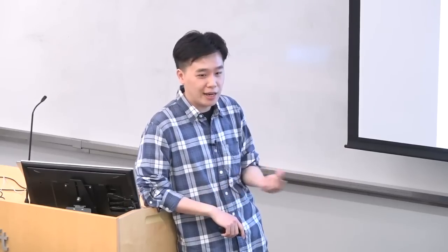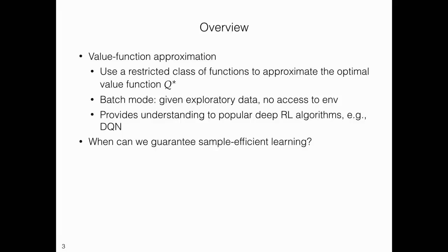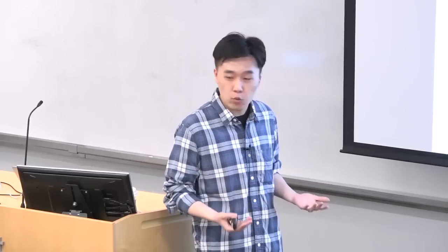The algorithm I'm going to focus on today is Fitted Q-Iteration. If you do an online approximation to it and hook it up with something like epsilon-greedy exploration, you get DQN. Since these methods are very central to the success of Deep RL, one question we should ask from the theoretical side is: when do they succeed? When can we guarantee sample-efficient learning?